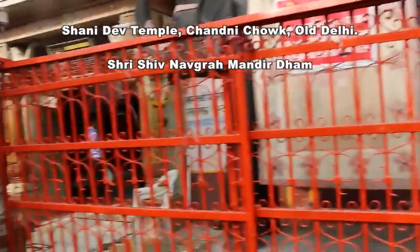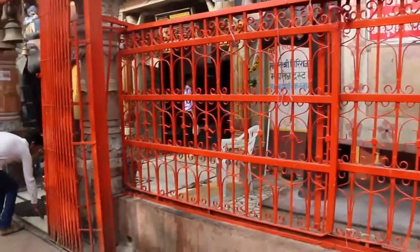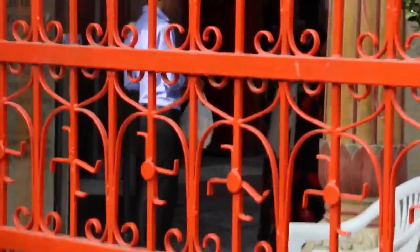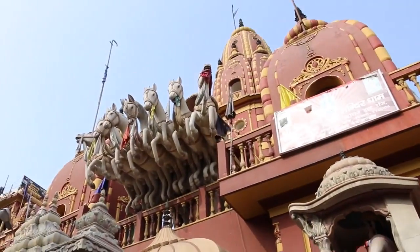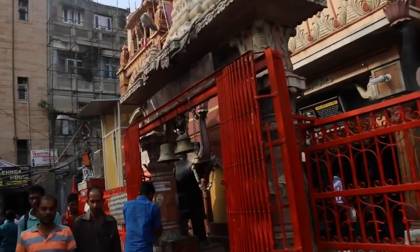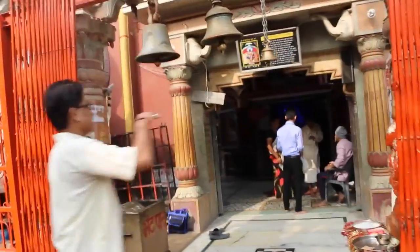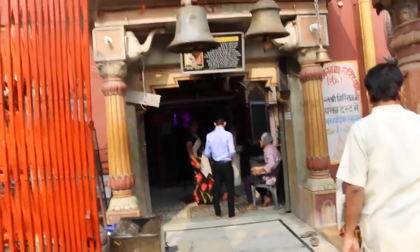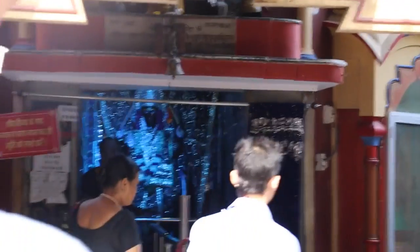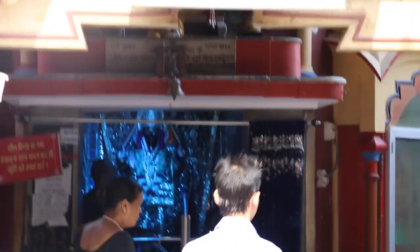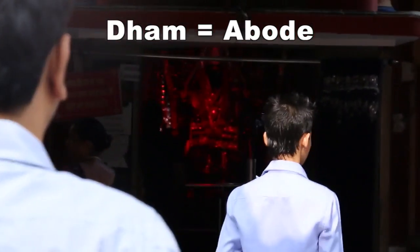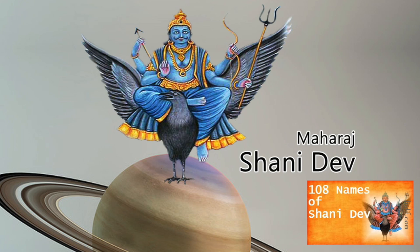Around here you'll see the swastika design within the fence. You have up here the chariot, and here the chariot also. As people are entering they are ringing the bells. This is the god right in here. We're now looking into the dham of the temple, and the deity within here is possibly Shri Shani Maharaj Ji.